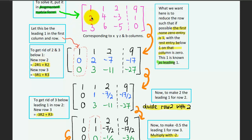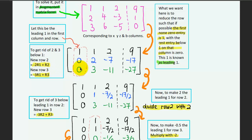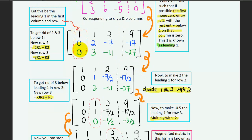Negative two multiplied by 1 added to 2 gives zero; negative two multiplied by 1 added to 4 gives 2; and we continue with the rest of the row. Similarly, to get rid of the 3 in the third row, I multiply the first row by negative three and add it to the third row, so the 3 is eliminated, and I continue with the rest of the entries.